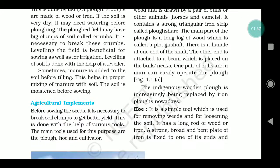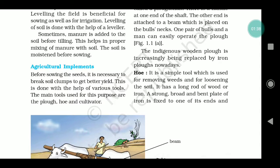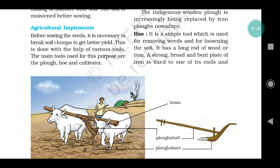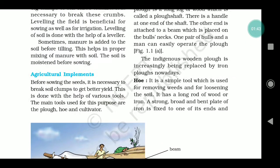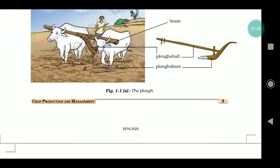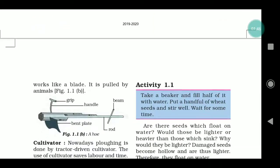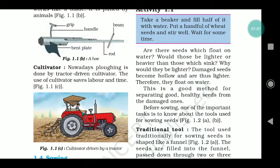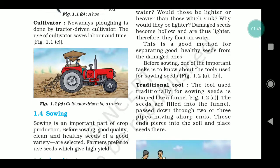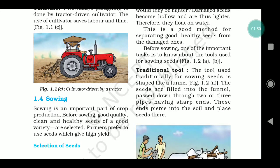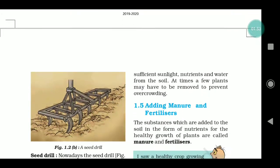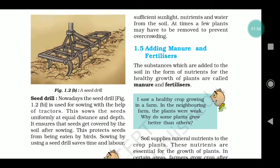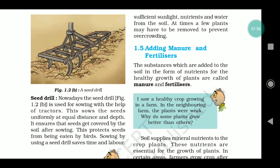Then agriculture implements — the instruments used in agriculture, we will discuss those as well: where they are used and all related points. For example, we will draw a photo of a tractor. Then sowing is one of the parts of agriculture that we will cover.